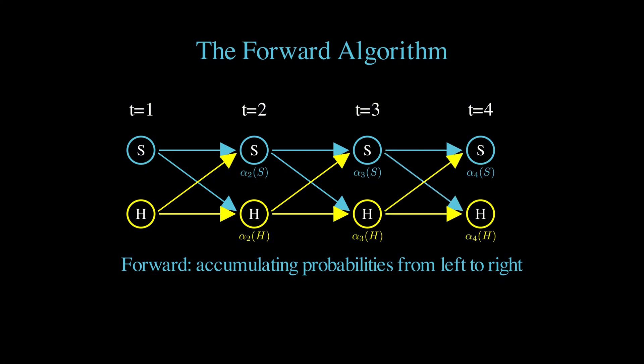We calculate this by taking all the ways we could have gotten to this point. We could have been sad on day one and stayed sad, or we could have been happy on day one and transitioned to sad. And for each path, we multiply the previous alpha value by the transition probability and the emission probability of seeing red given sad, and then we add all these paths together.